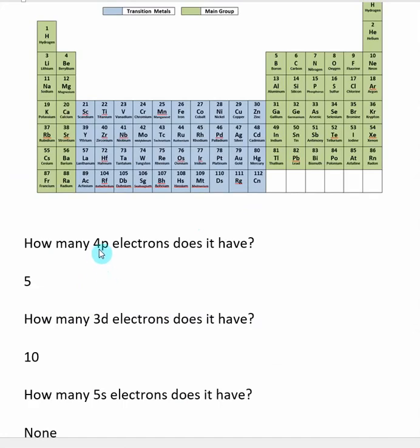We ask how many 4p electrons. Now we are getting to the orbital subshell that is in bromine's valence. We realize that the p block here starts with n value equal to 2, so this would be 3, this would be 4. Bromine has 1, 2, 3, 4, 5 electrons in its 4p subshell.